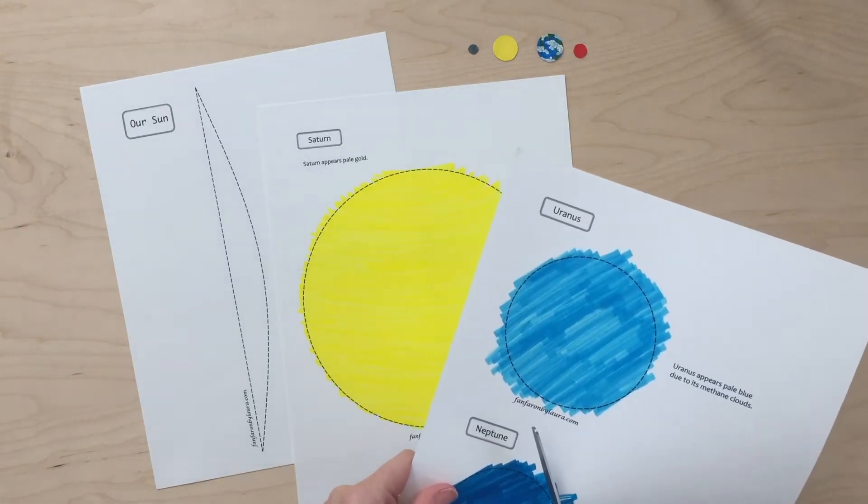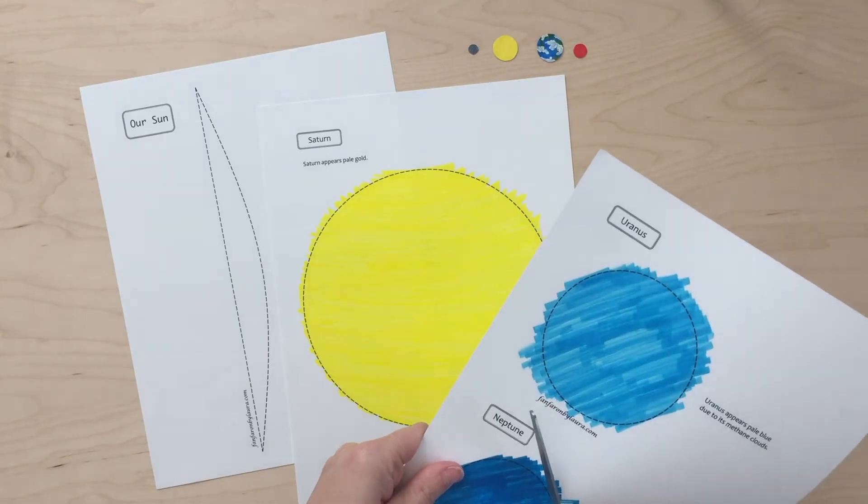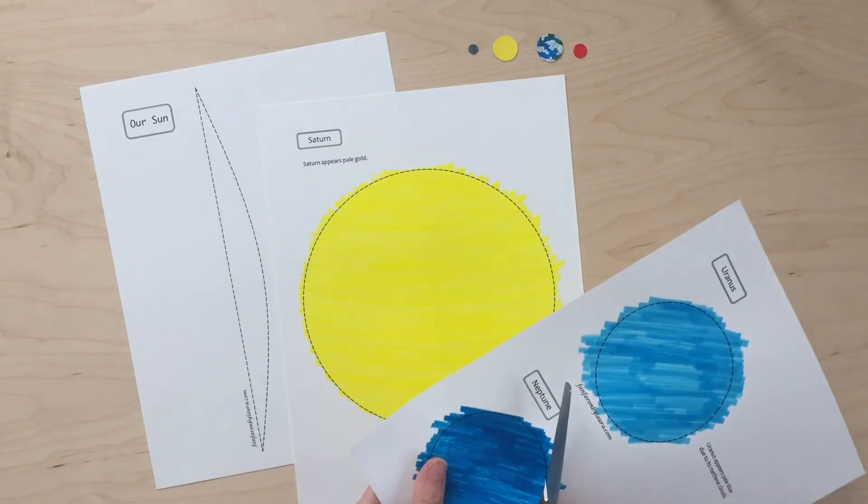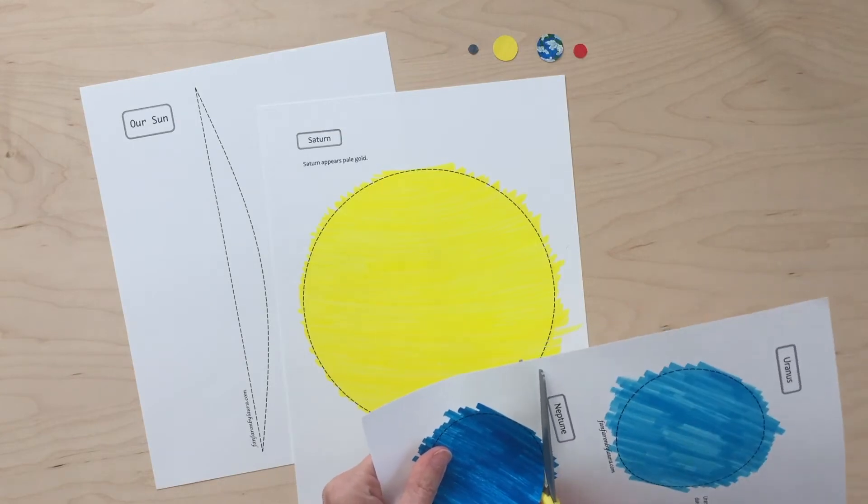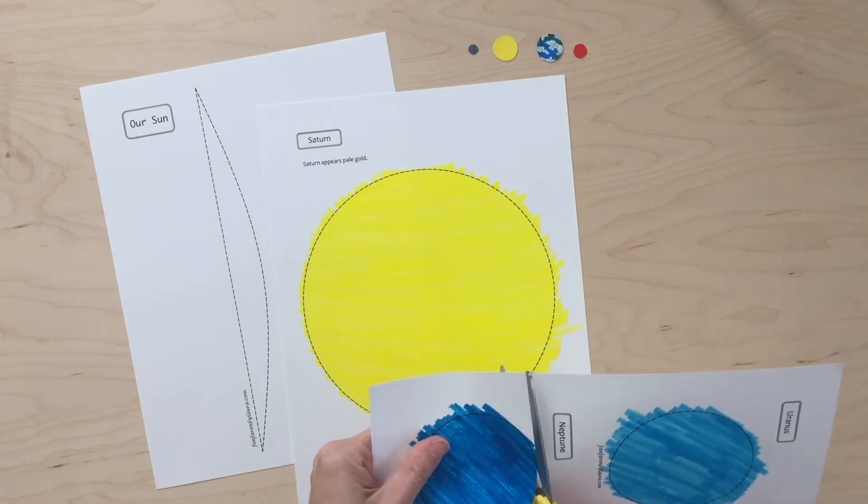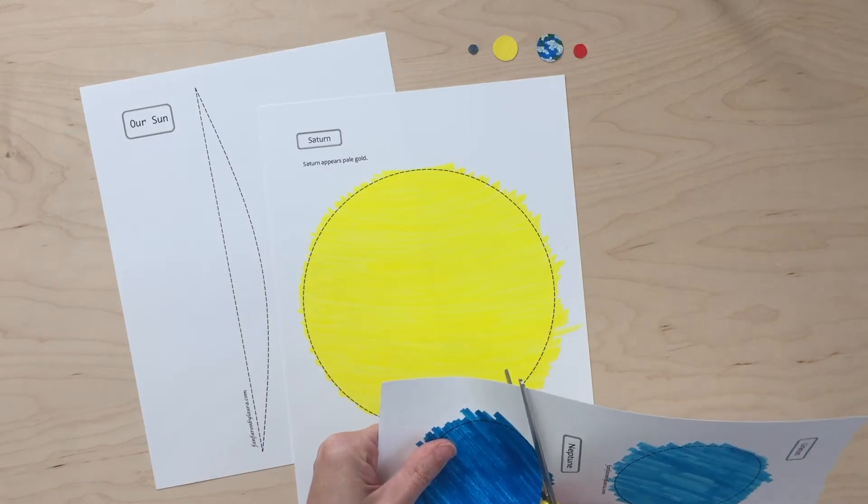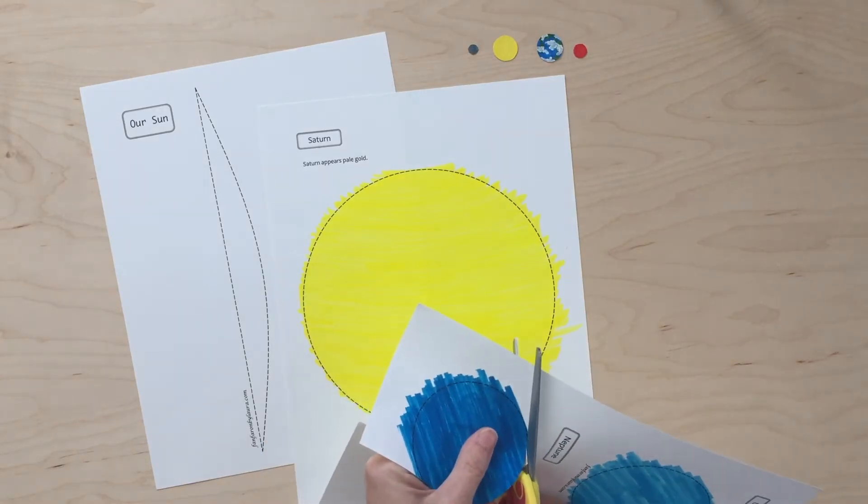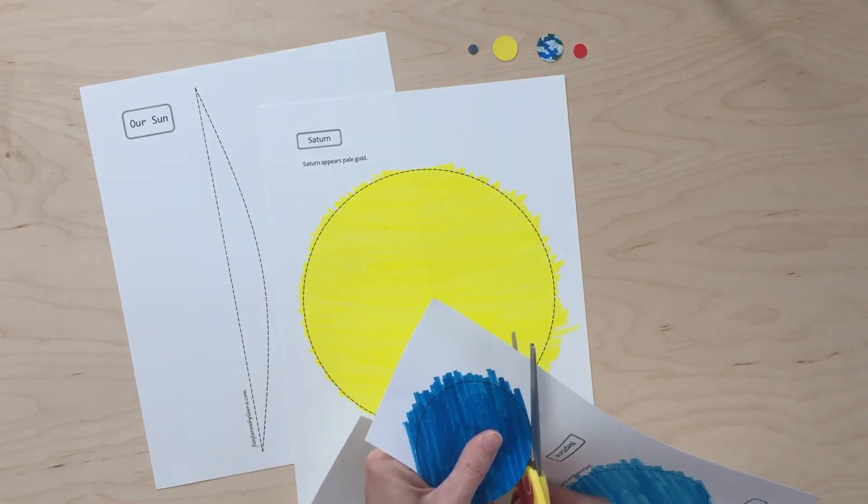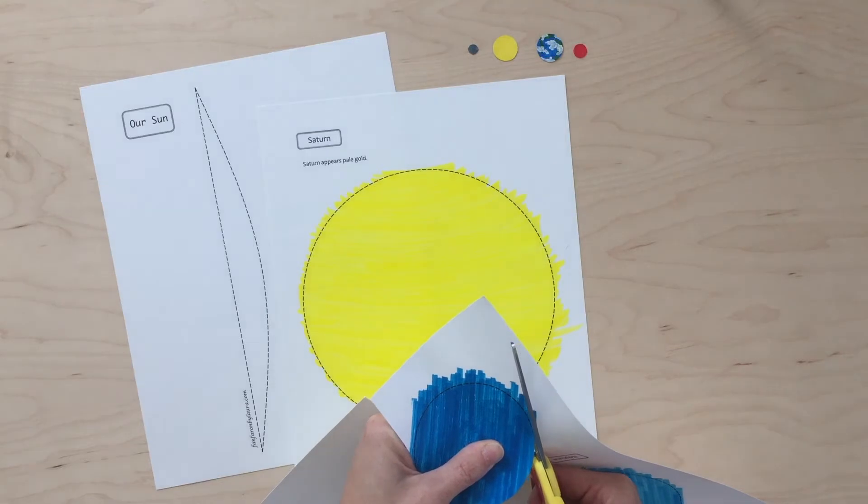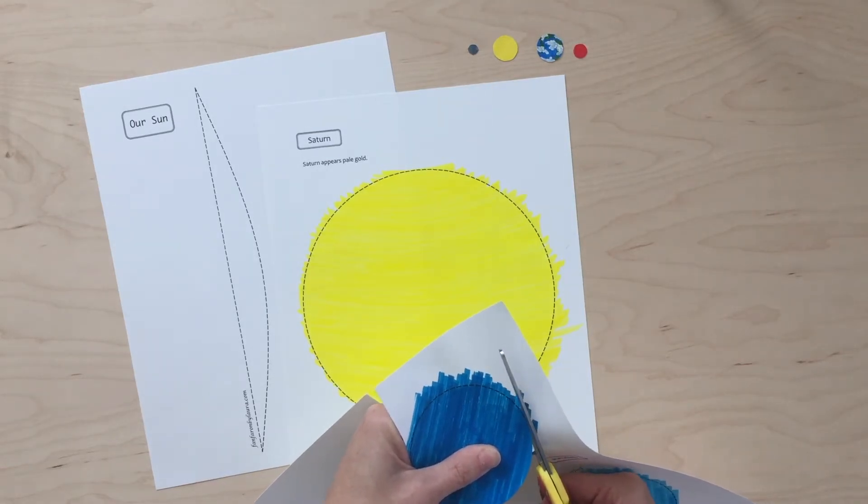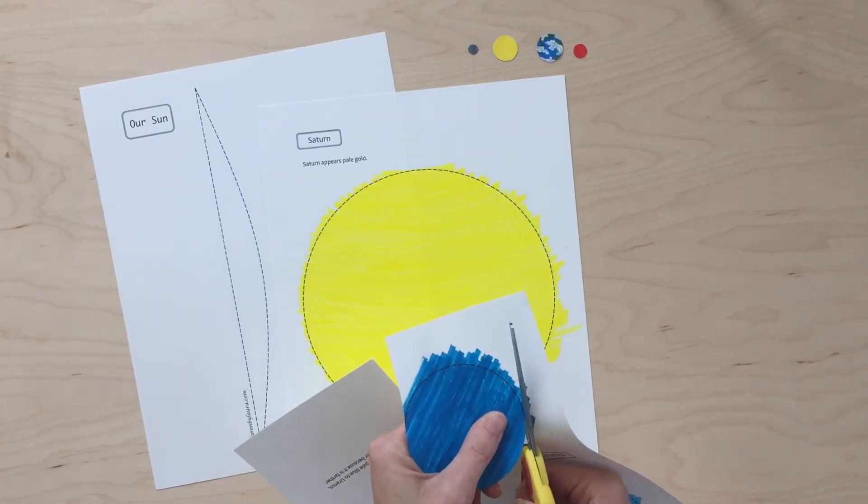So as I'm cutting, you might be wondering why my sun is still sitting here colored no color at all. Well, guess what I learned? The sun is actually white because it's made up of all the different colors. It appears yellow to us because of Earth's atmosphere. So because I printed the sun on white paper, I'm just going to leave it as is.